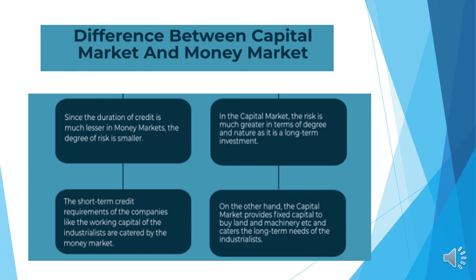To summarize: capital market is the market for long-term instruments such as stocks, bonds, shares, and debentures. Securities with maturity of more than one year are traded in the capital market. On the other hand, money market instruments include treasury bills, call money, acceptance, bills of exchange, and certificates of deposits, which have a maturity period of one year or less. Money market is the best source of working capital, while capital market is the best source of long-term finance.